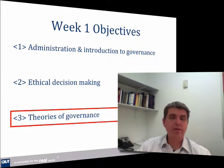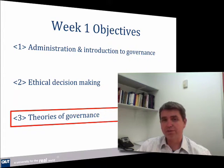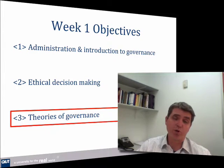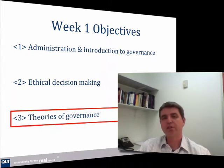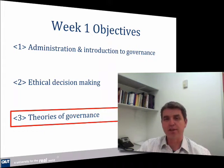In addition to ethics, the other key thing that we need to think about in this foundation section are some theories of governance — how people have given us some models for what governance is doing and how it works. So we want to go through four key theories. I'm going to spend this video mainly talking about the first theory, agency theory, because it's been so influential in corporate governance.